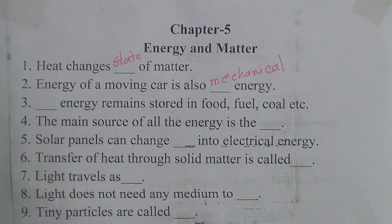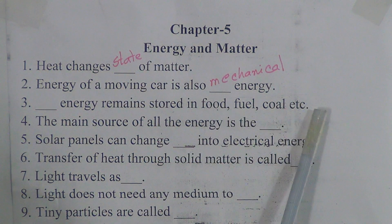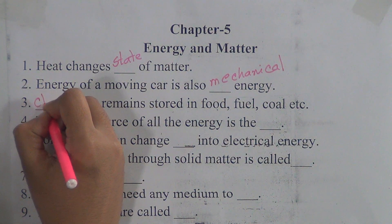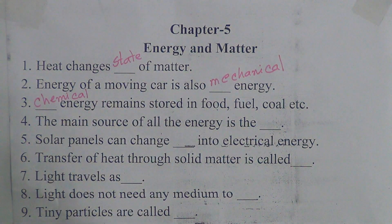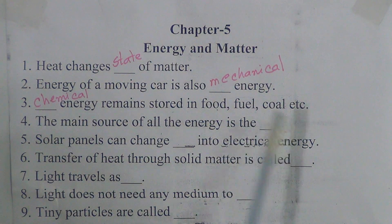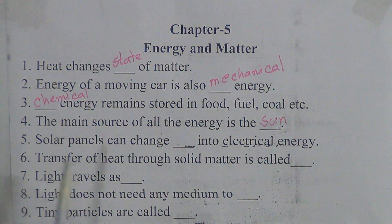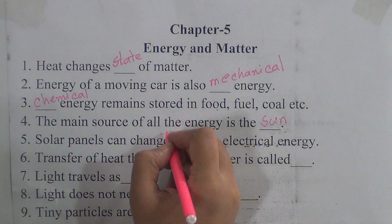Number three: chemical energy remains stored in food, fuel, coal, etc. — that is chemical energy. Number four: the main source of all energy is the Sun. Number five: solar panels can change light energy into electrical energy.